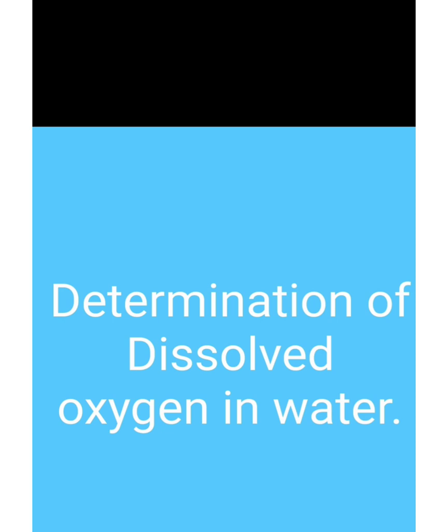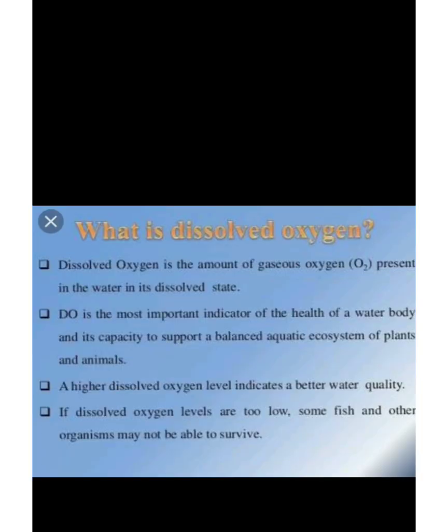Determination of dissolved oxygen in water. Dissolved oxygen is the amount of gaseous oxygen present in the water in its dissolved state. Dissolved oxygen is the most important indicator of the health of a water body and its capacity to support a balanced aquatic ecosystem of plants and animals.